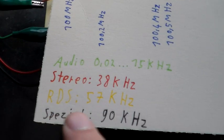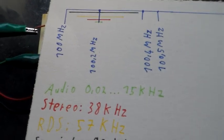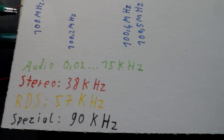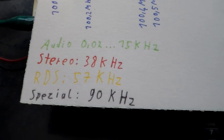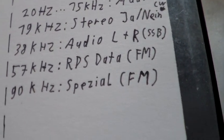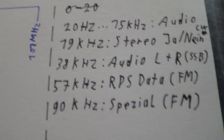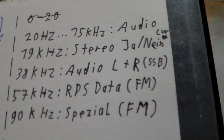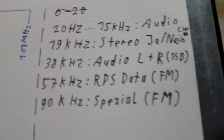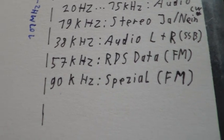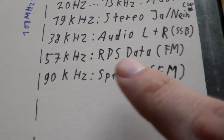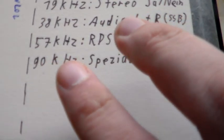RDS is what lets your car radio display the station name, traffic information, and what type of music is being broadcast. There's also a special signal around 80 to 100 kilohertz, I'll note 90 kilohertz. Here's a summary: 20 Hz to 15 kHz is audio; 19 kHz is the stereo pilot carrier telling the radio whether it's a stereo signal; 38 kHz carries the left and right difference signal, receivable with a single sideband receiver; 57 kHz carries RDS data using narrow FM; and 90 kHz is the specialist subcarrier, also narrow FM.